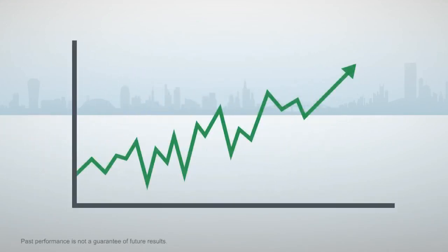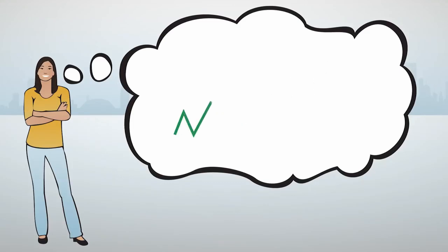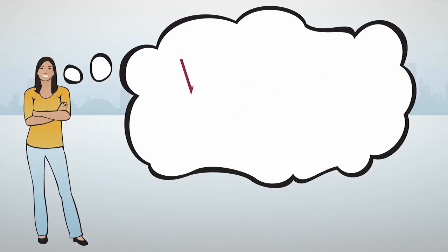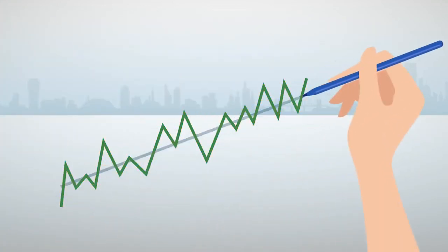Some investors determine a stock's trend by identifying the direction of its highs and lows. Trend may be important because many investors believe that a stock will generally continue in the same direction it's been going. These investors would anticipate a stock with a strong uptrend to continue to rise, while one with a strong downtrend will continue to fall. Some investors draw lines to attempt to identify the trend.